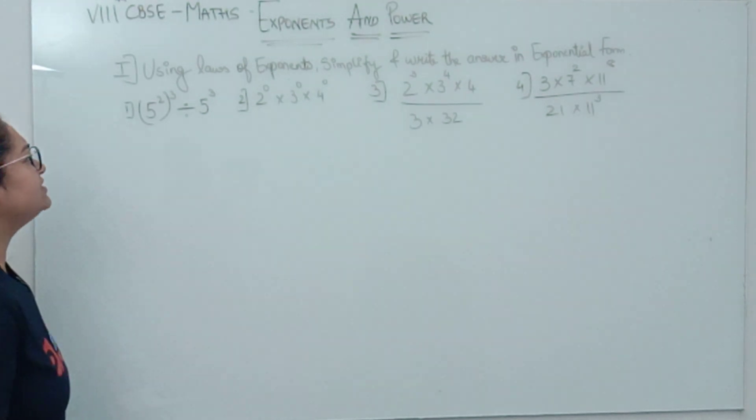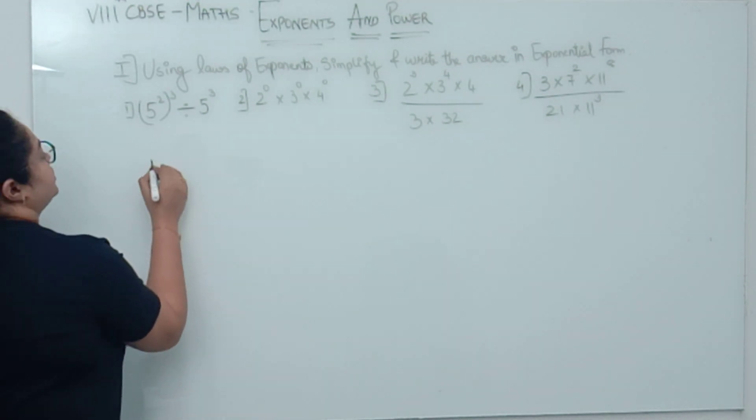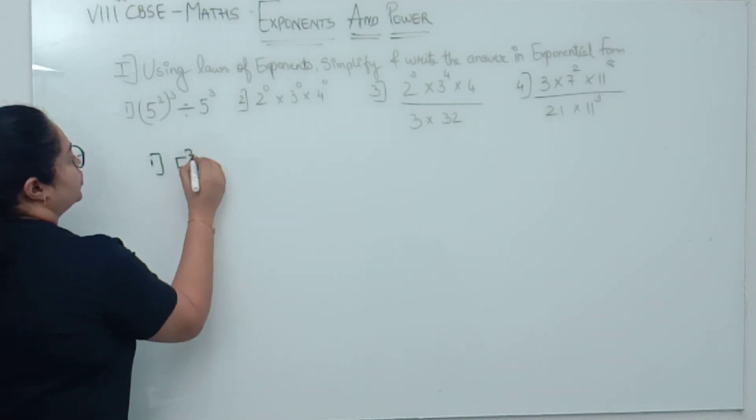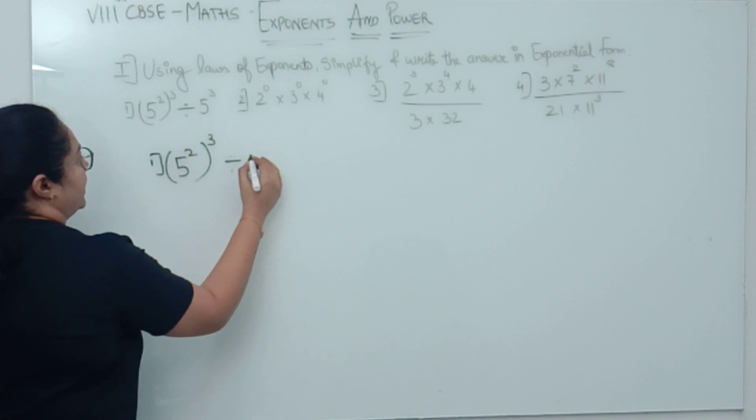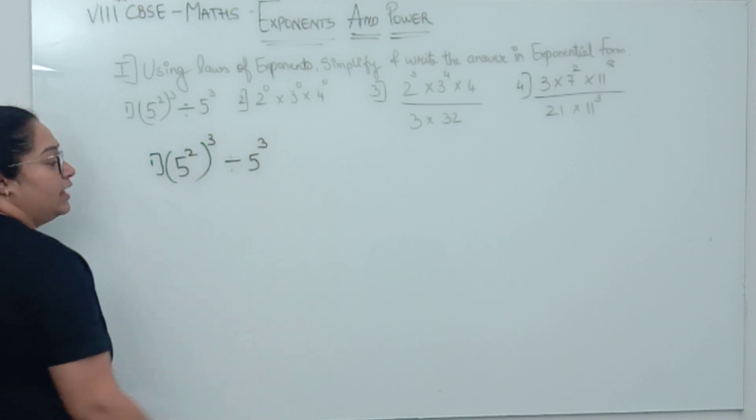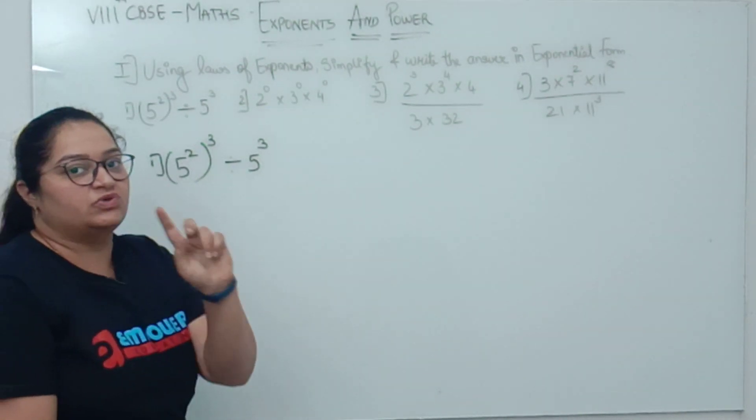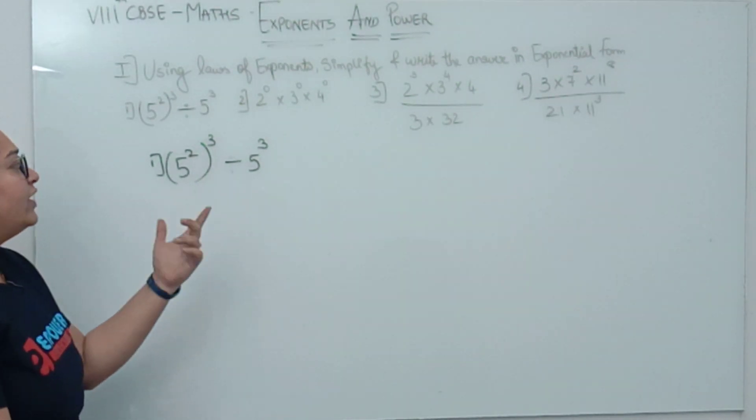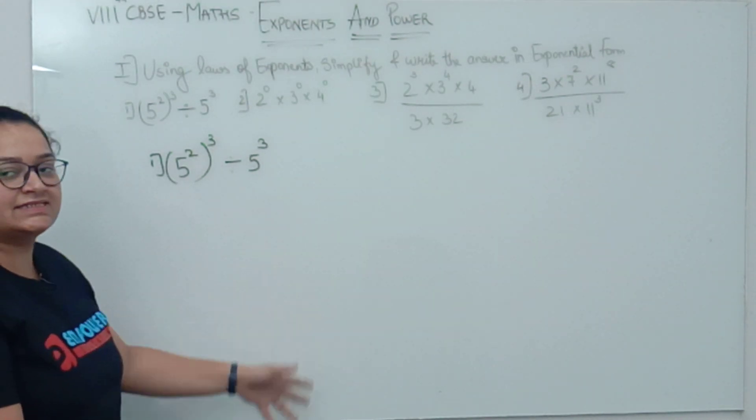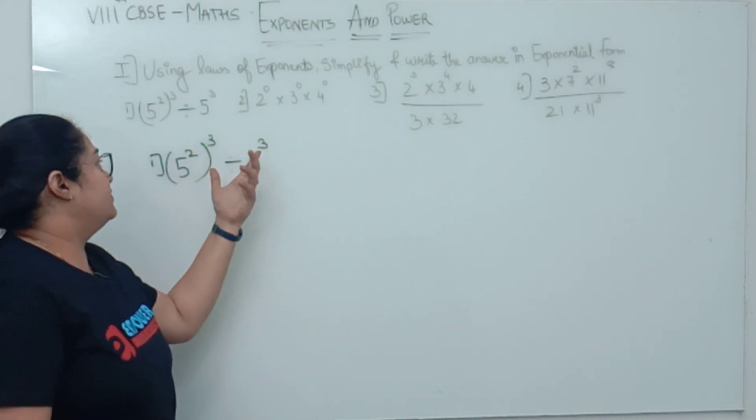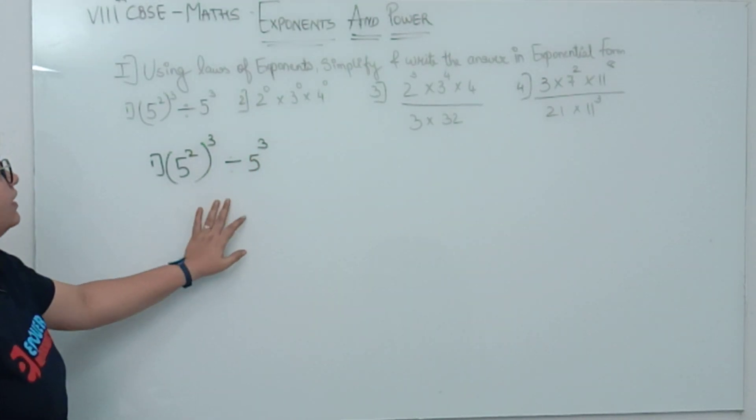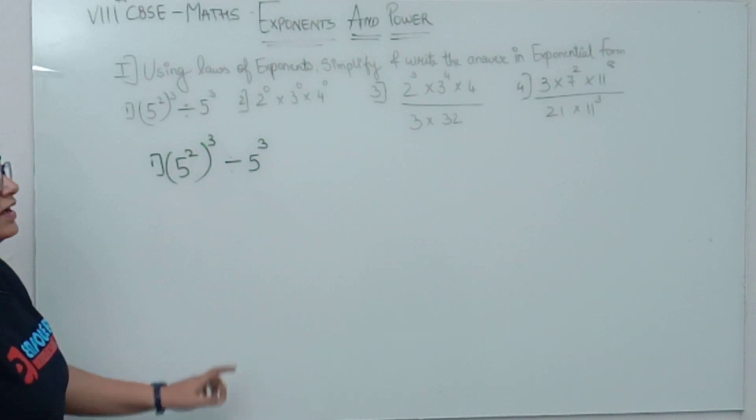The first sum says (5²)³ divided by 5³. Now, keep in mind that in this sum, there will be two laws which will be applicable. First, we will identify that the base is the same. But for now, when you solve, which law will apply here?